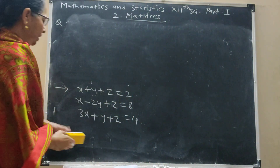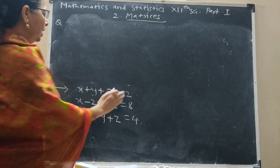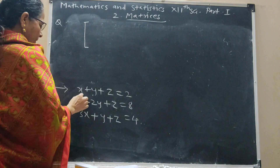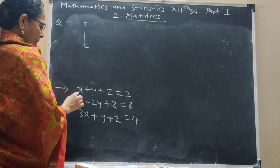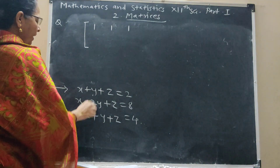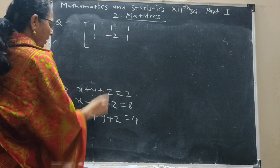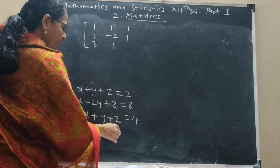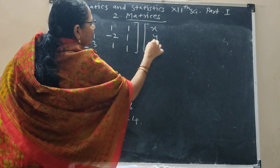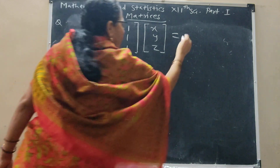Now see the sequence: x, y, z, x, y, z, x, y, z. Convert it into a matrix of coefficients. Take 1, 1, 1 for the first row; 1, negative 2, 1 for the second row; 3, 1, 1 for the third row. With the variable column x, y, z equal to 2, 8, 4.